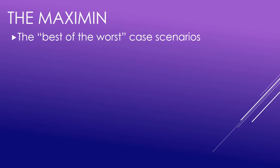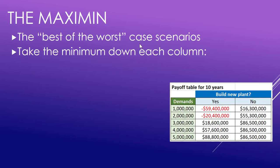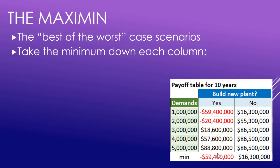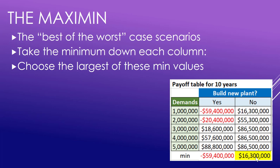Maxi min is kind of the opposite — it's the best of the worst case scenarios. Take the minimum down each column. You look at each column, get the minimum for each, and then take the largest of these minimum values, which is the 16 million. This is the best of the worst case scenarios.